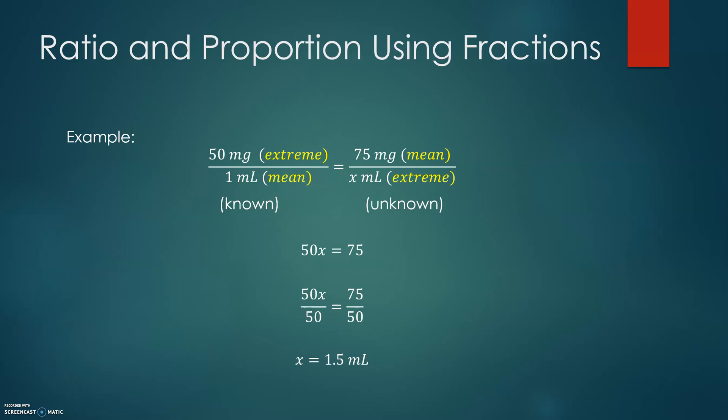Looking at the proportion with fractions, in the numerator of the first ratio the extreme is on top and the mean is at the bottom in the denominator. In the numerator of the second ratio, the mean is in the numerator and in the denominator we have the extreme. The first ratio is the known ratio which is given as available. The second ratio on the right has x in the denominator, so this is the unknown ratio. How do we solve proportion? We multiply mean by mean and extreme by extreme. We call that cross products in the proportion. So 50x equals 75. Dividing by 50 and isolating the x, we can divide 75 by 50, reducing by 25. We have 3 over 2, and 3 over 2 is 1.5 milliliters.